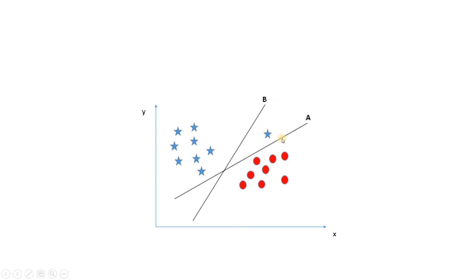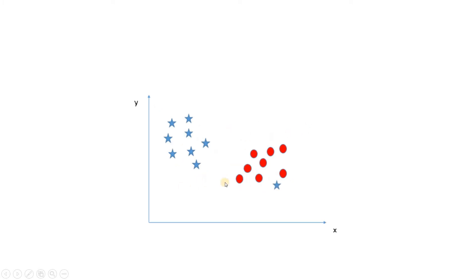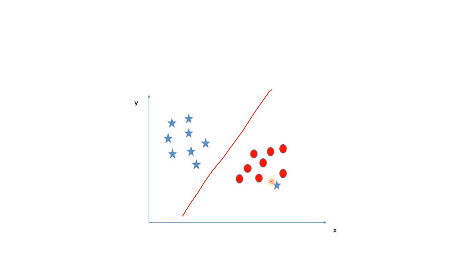In this situation, the algorithm is going to select line A. It will go for misclassification only if there is no other option. But if there is still any chance to keep all classes on their correct side, it will choose that option. Now coming to the next example: in this particular case, there is no possible line that will perfectly divide the two classes. So the algorithm selects a line where one star data point gets misclassified — that is acceptable when there is no perfect separation possible.